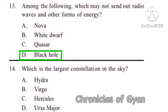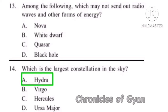Question 14: Which is the largest constellation in the sky? Option A, Hydra. Hydra is the largest of the 88 modern constellations and it measures 1303 square degrees, and is also the longest at over 100 degrees.